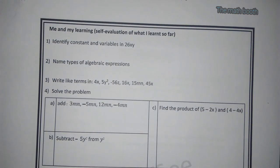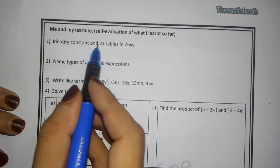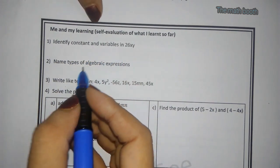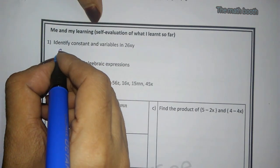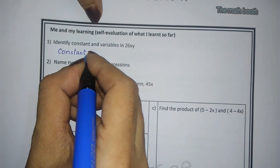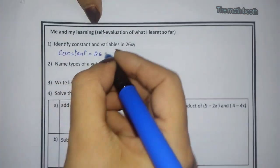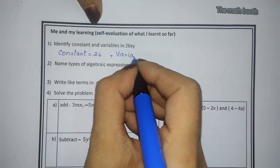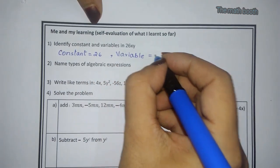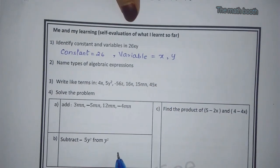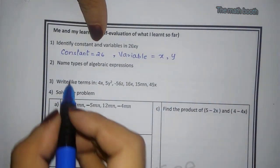What they have given in this me and my learning sheet. Identify constant and variable in 26xy. So here constant we can write constant is 26, and variable here is x and y. Variable is x and y, and constant is 26.